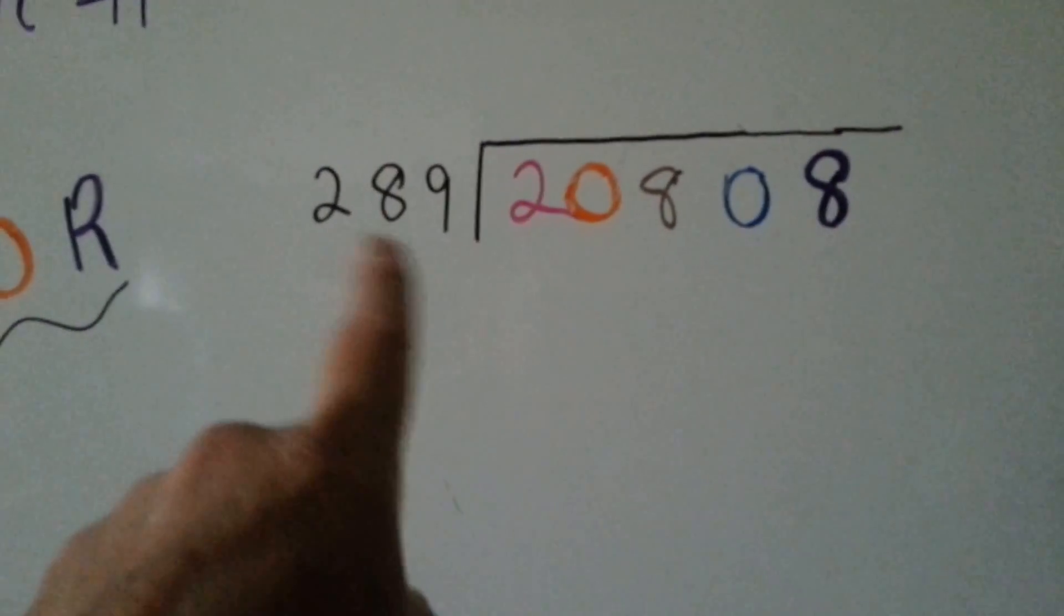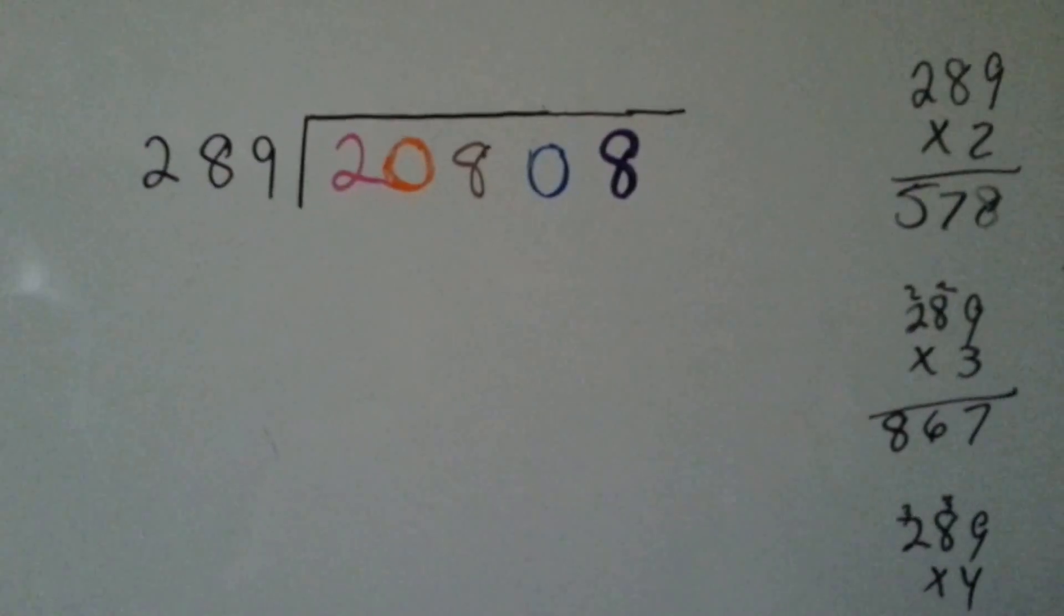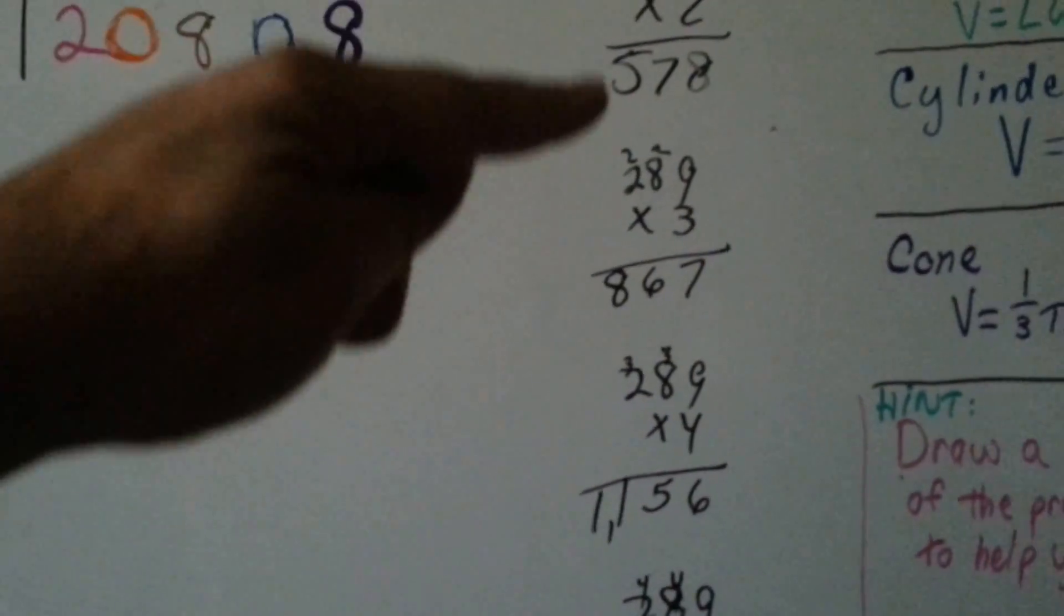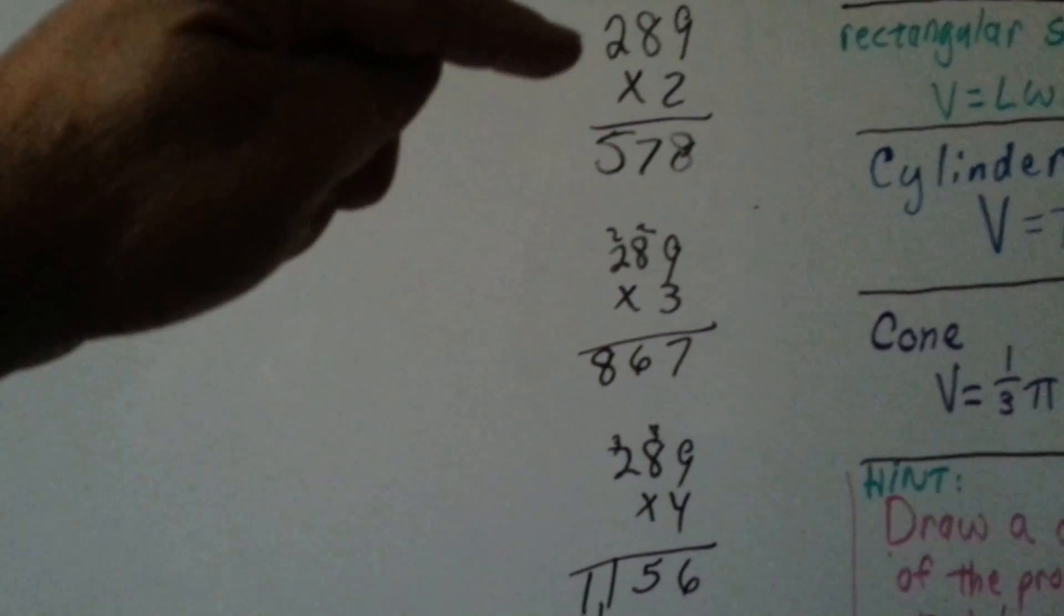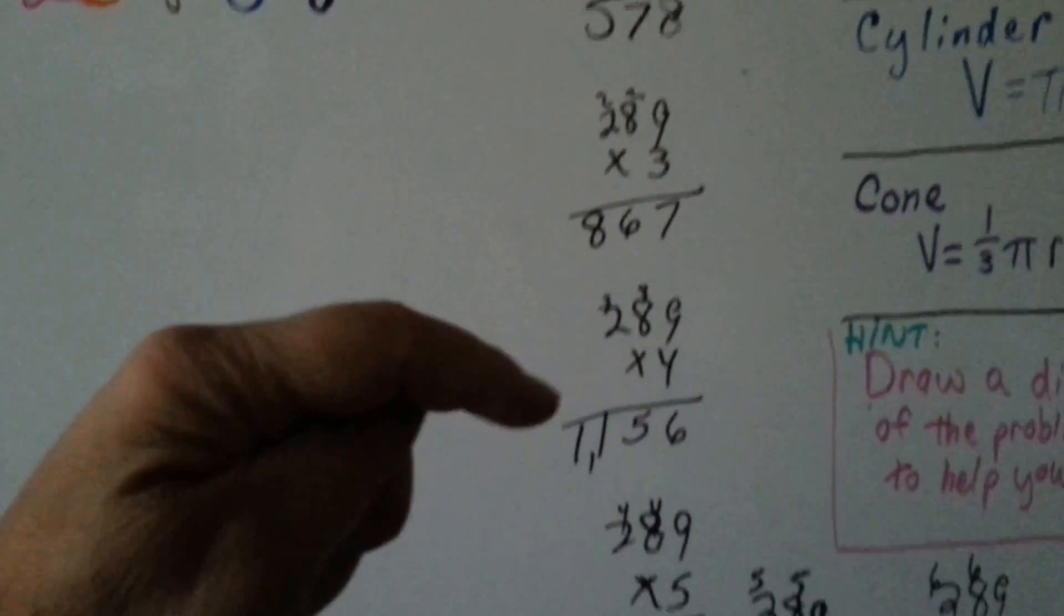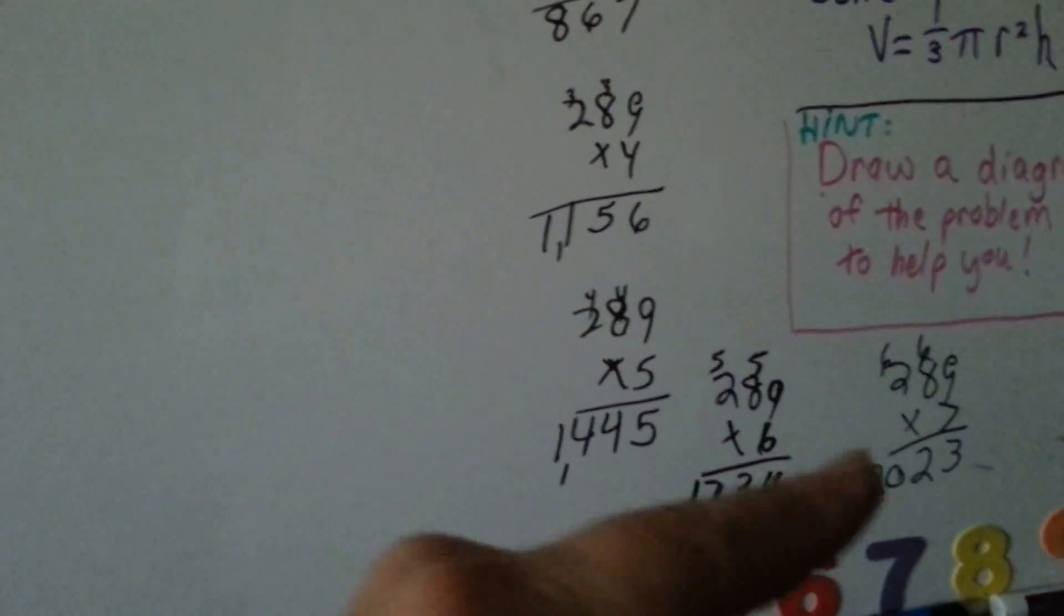Now, when you're dealing with a three-digit divisor, the first thing you have to do, especially if you don't have a calculator, is you need to start doing your math down the side. So I did it times 2, times 3, times 4, times 5, times 6, and times 7.